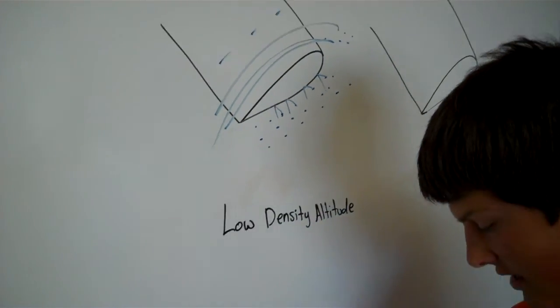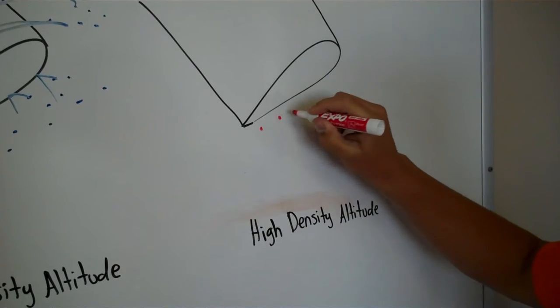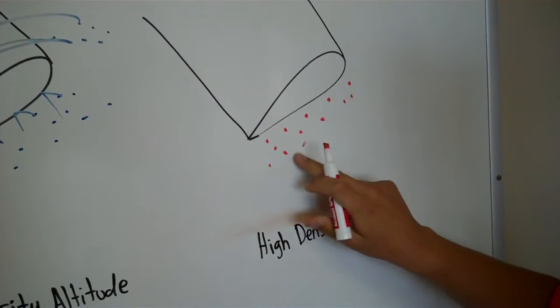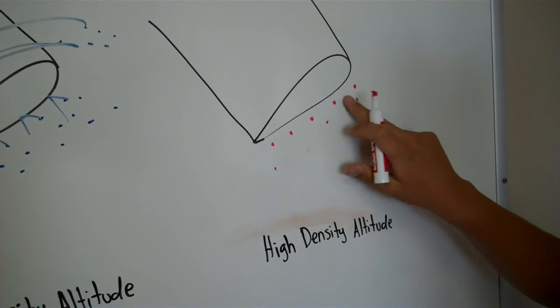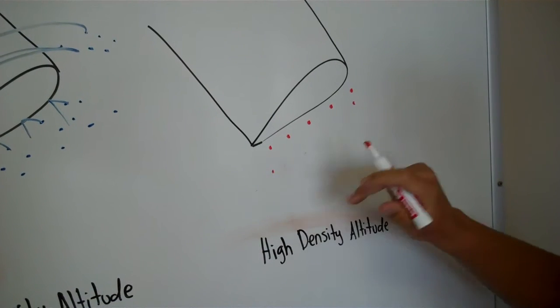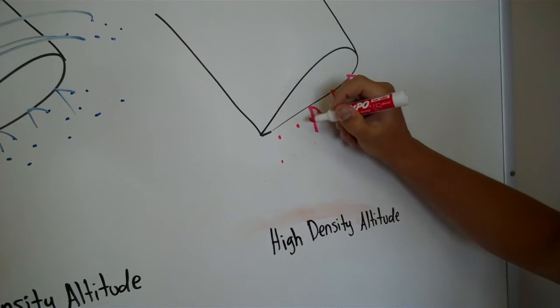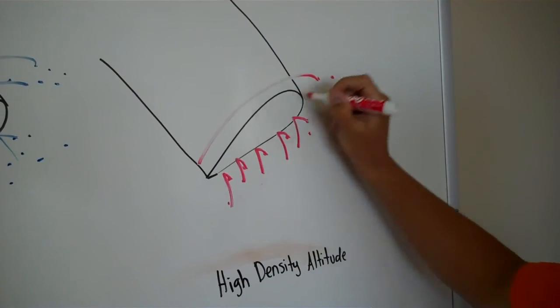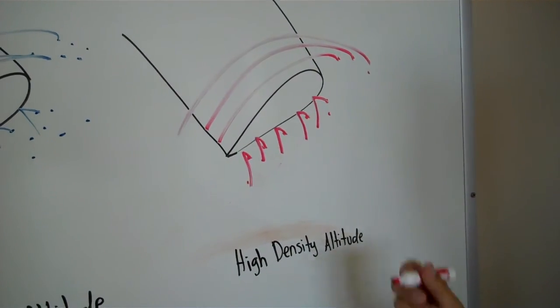On a high density altitude day, if it was really hot outside or a low pressure day, we'll have fewer molecules to interact with our airfoil, which will produce less lift. We'll have less going over the top to produce that low pressure.